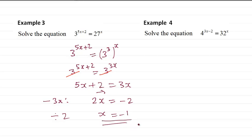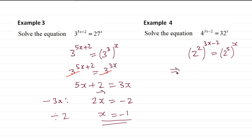Then we do Example 4. This time, because we have 4 and 32, the base number we can choose is 2. So 4 is 2 squared, then to the power 3x minus 2. And 32 can be written as 2 to the power 5, raised to the power x. So here, 2 times everything on the top gives us 6x minus 4.